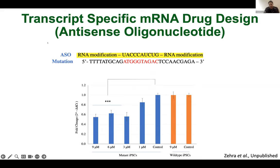We designed the ASO targeting the mutation transcript — this sequence part is present in all four transcripts we identified. My postdoctoral fellow Zehra did all the work. The ASO was injected at different levels: a control not injected with ASO, an ASO-injected wild type, a mutation line without ASO, and mutation lines with different ASO levels. We identified that certain ASO designs can knock down half of the transcript — exactly expected for a heterozygous mutation — showing almost 50% knockdown of the gene.